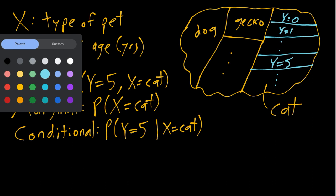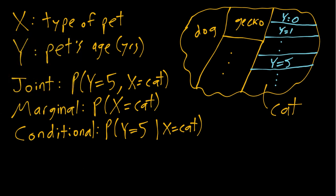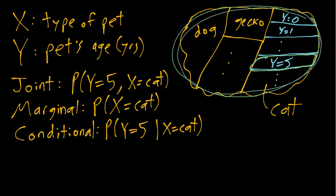So when we are thinking about what we had earlier, our joint probability, the probability of what's the probability of a five-year-old cat, so both Y equals five and X equals cat, that's saying what portion of the population is this five-year-old cat box compared to the entire pet population that we're interested in.